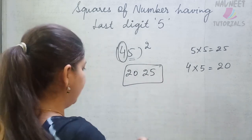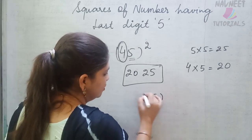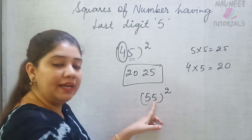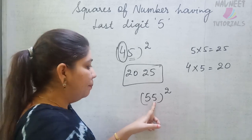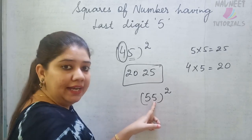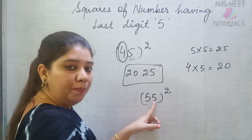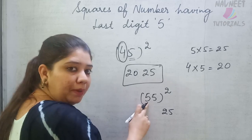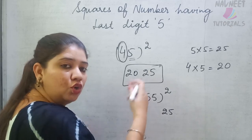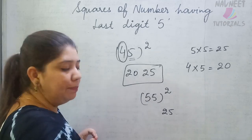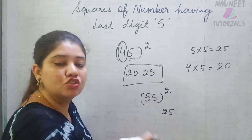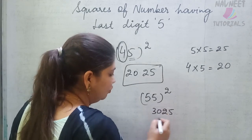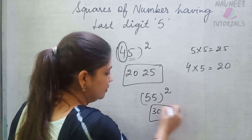Let us find out another example. For 55 squared, the last two digits are 25. The remaining digit is 5, and the next number is 6. So 5 times 6 is 30. Write 30 at the front. So the answer is 3025.